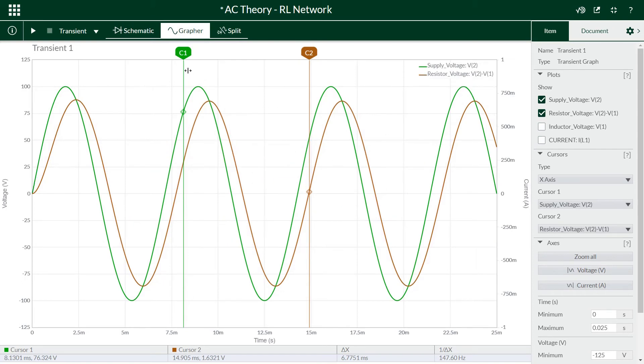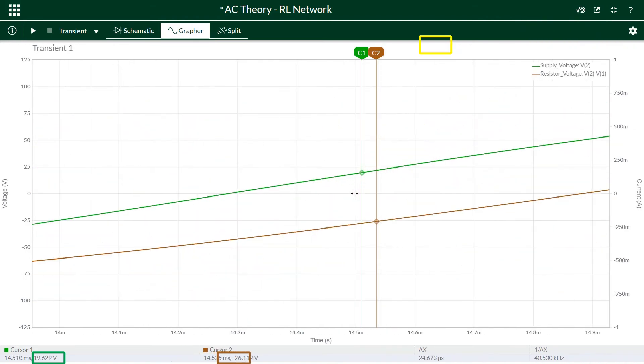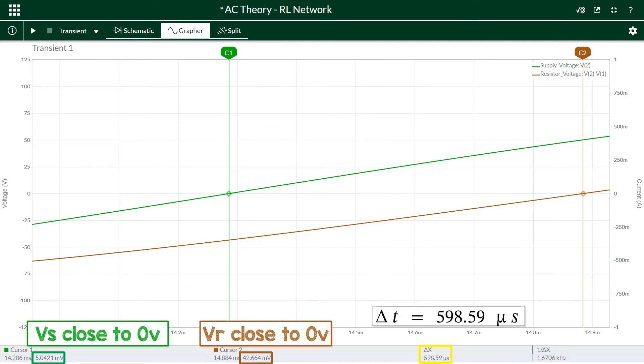Turn off the current and inductive voltage and zoom in again, making note of where the cursors are and the voltages in the bottom left. Get them as close to zero as you can and then note the time difference between them. It is around 600 microseconds here.